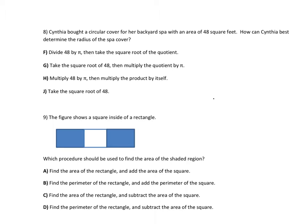This is Unit 7 Test Corrections number 8. Cynthia bought a circular cover for a backyard spa with an area of 48 square feet. How can Cynthia best determine the radius of the spa cover?